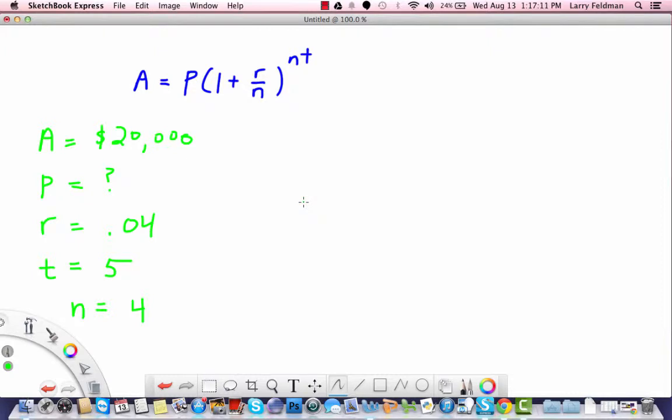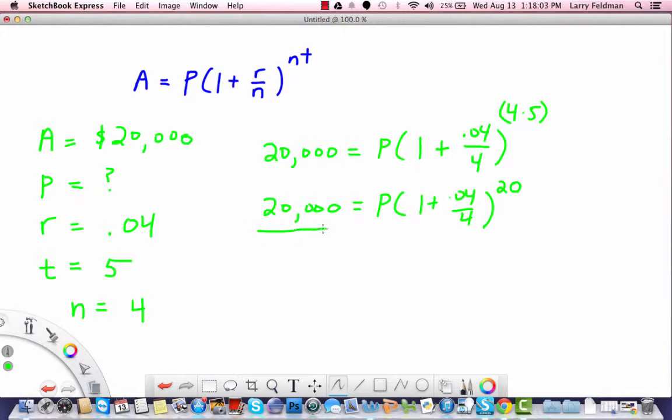Now, substituting in what we have, we sub in $20,000 for A. We don't know P, so we just leave that as a variable. 1 plus 0.04 divided by N all to the Nt. So that is 4 times 5. Be careful of order of operations here. So we have 20,000 equals P times 1 plus 0.04 divided by 4 raised to the 20th. And we're going to need to use a calculator again. But we're solving for P. So all we need to do is divide both sides by this quantity, 1 plus 0.04 over 4 to the 20th.